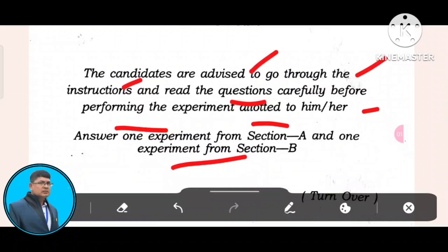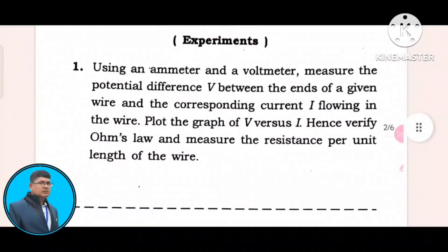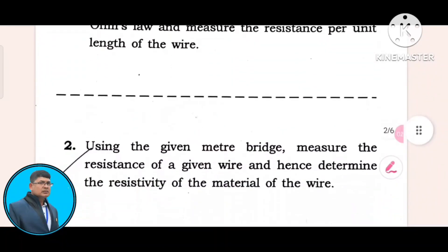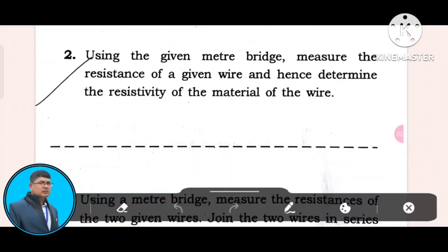Section A has one question from each group. Using an ammeter and a voltmeter, measure the potential difference V between the ends of a given wire and the corresponding current I flowing in the wire. Plot the graph of V versus I, hence verify Ohm's law and measure the resistance per unit length of the wire. This is experiment number 1. Experiment number 2: using the given meter bridge, measure the resistance of a given wire and hence determine the resistivity of the material of the wire.